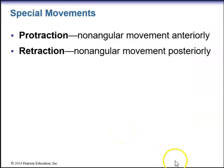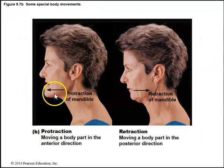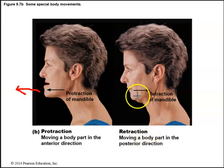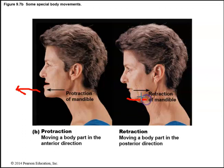Protraction is a non-angular movement anteriorly, while retraction is a non-angular movement posteriorly. Protraction moves the mandible anteriorly, and retraction brings the mandible back posteriorly toward the head.